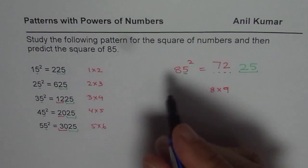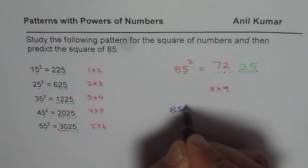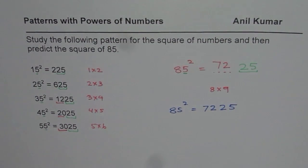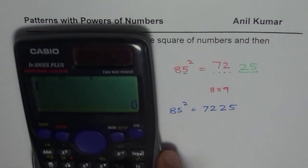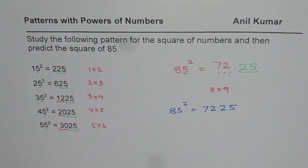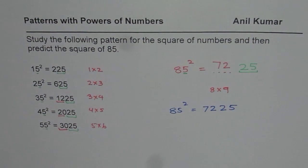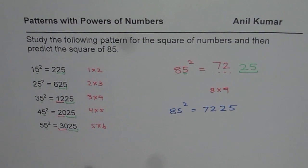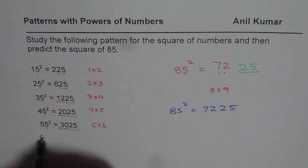answer, and the answer is 85 squared should be equal to 7225, correct. So let us check this answer. So we have 85 squared equals 7225. That is correct. So that is a very good way of finding squares of numbers ending with 5, correct.